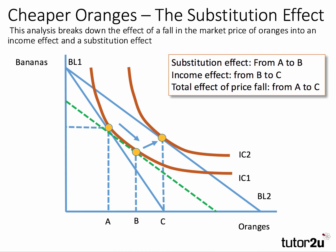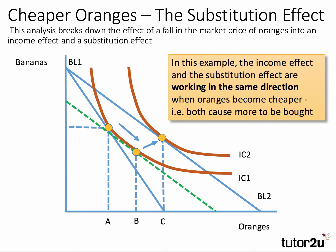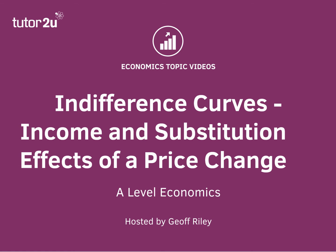Both factors in this example — the income effect and the substitution effect — are working in the same direction. This assumes that oranges are a normal good: people want to buy more fresh oranges when their real incomes rise and when they become cheaper. Both the income effect and the substitution effect are causing more oranges to be bought. That takes you through the income and substitution effects of a price change for a normal good such as fresh oranges.